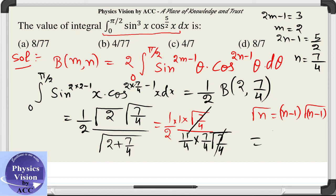After cancellation, the 2 in the denominator also cancels, and we are left with 8/77. So the answer is 8/77, which is option A. Hence option A is correct for this question. Stay tuned with us for more questions and thanks for watching.